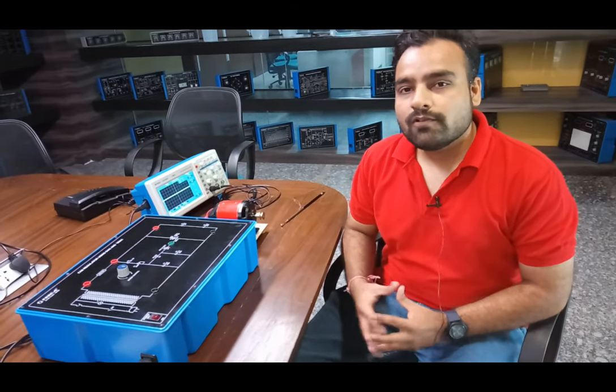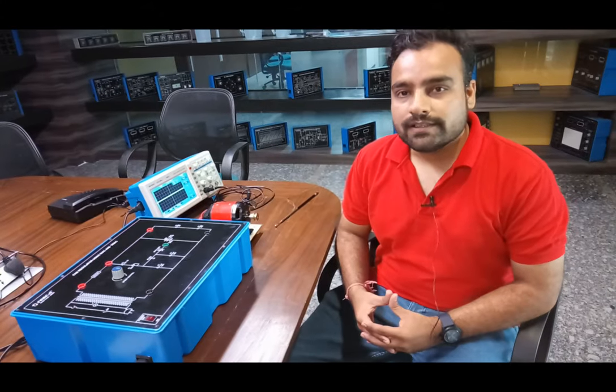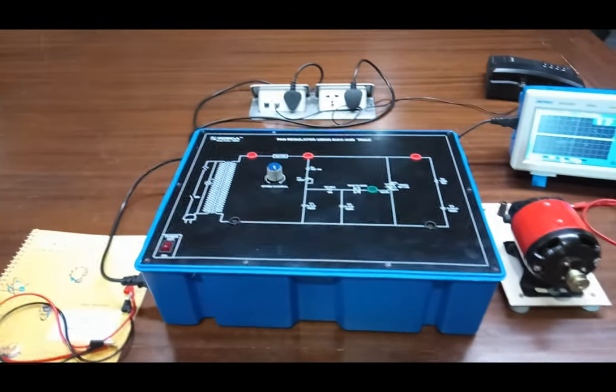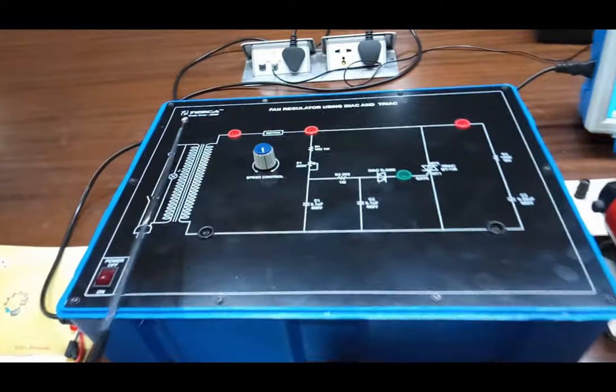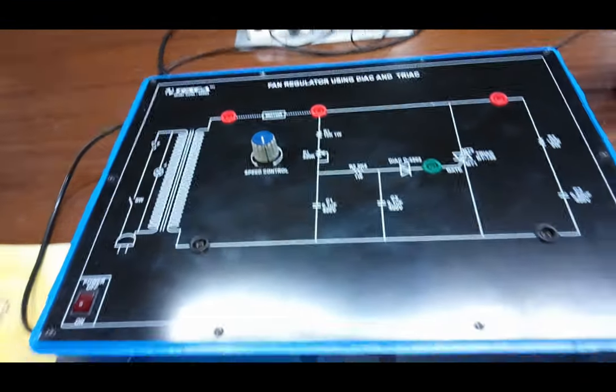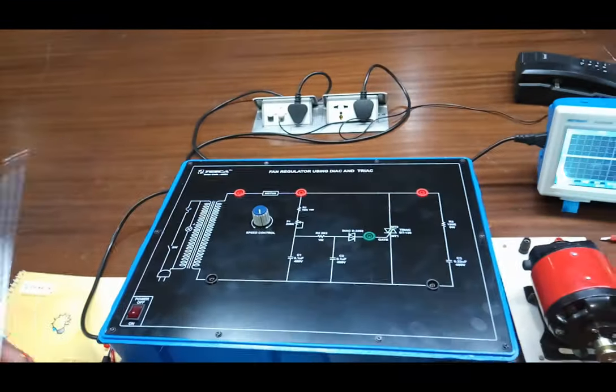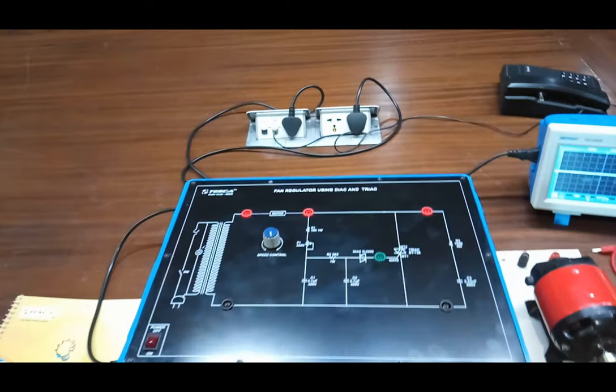So, we move on to the practical for this. This is our trainer kit. The order code for this trainer kit is 46553. This is a fan regulator trainer kit using thyristor and triac.